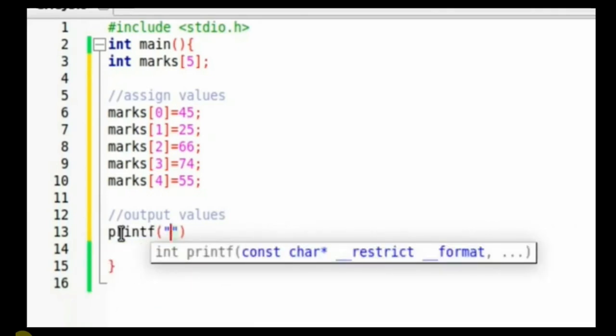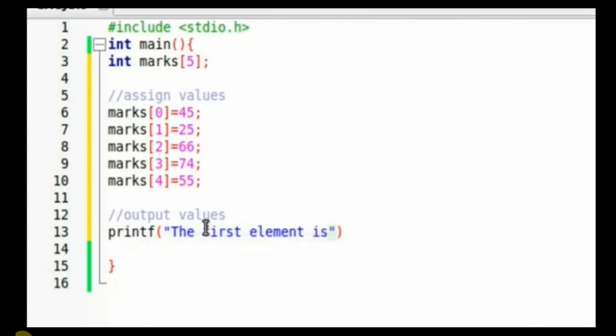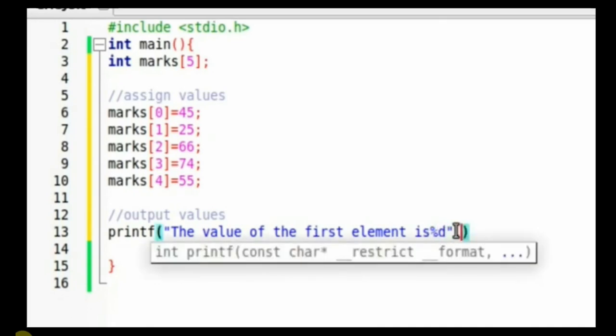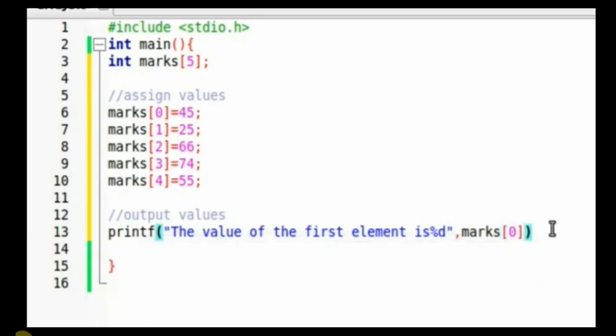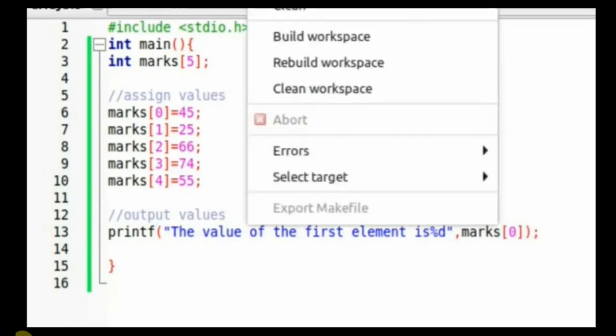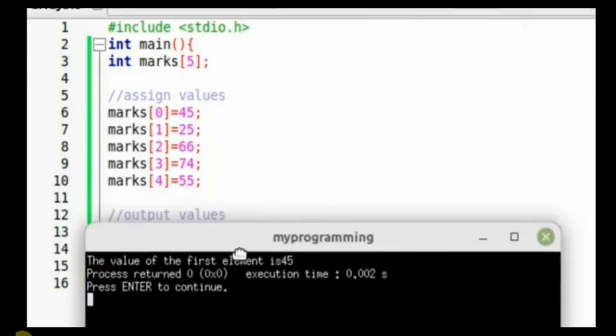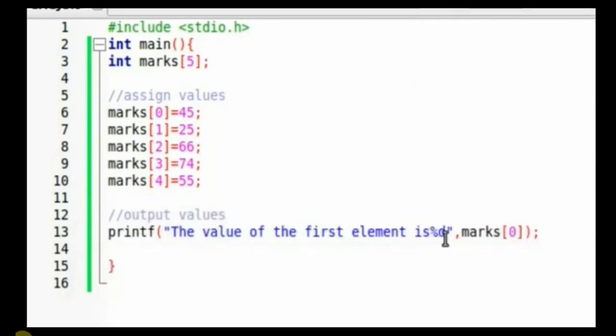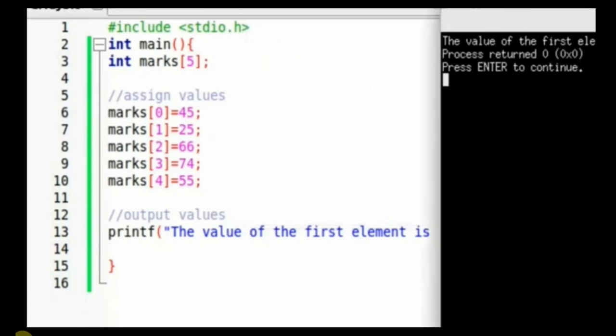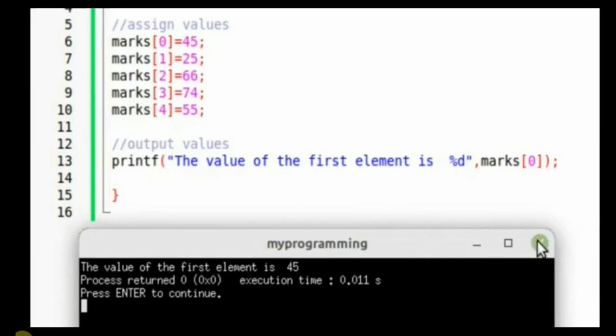Using printf, we're able to access these values. Remember, since the array is of integer type, this implies we must work with %d. That's the only way we're going to be able to output these values. We use %d and then the name of the array with the subscript. Let's try that out. Subscript 0 is 45. Let's give it some space. That looks better. The value of the first element is 45.